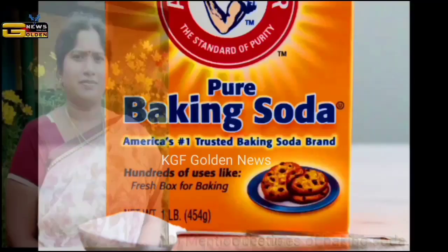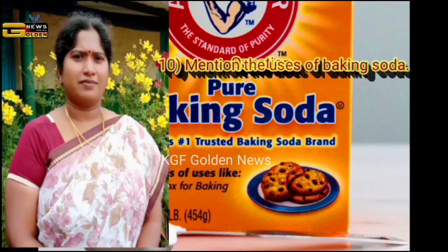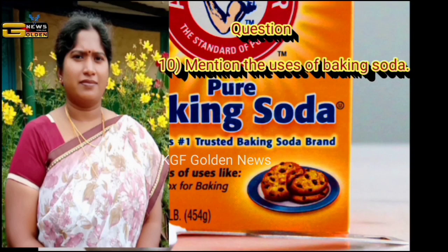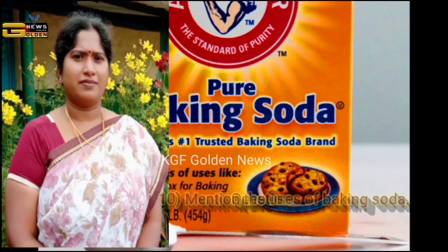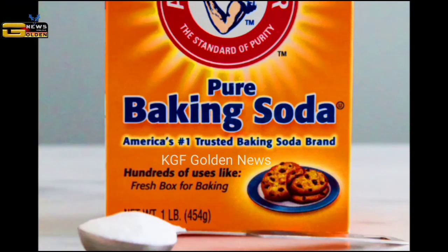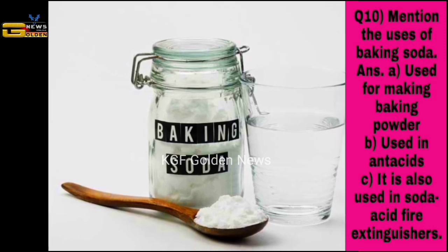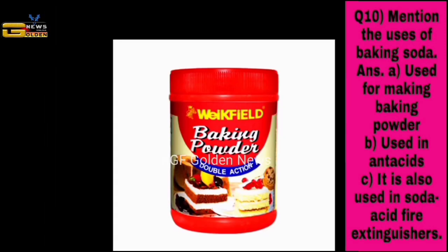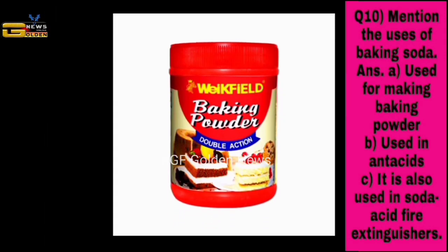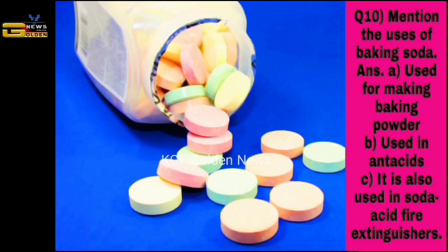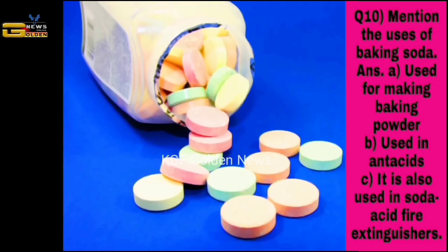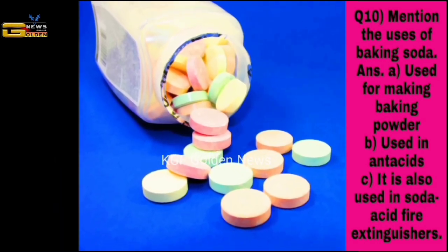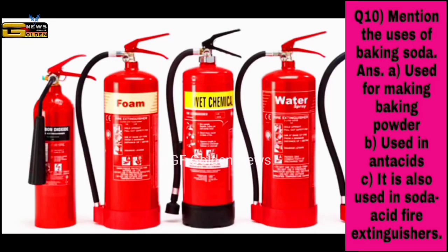An important question. Question number ten: mention the uses of baking soda. The answer is: a. used for making baking powder; b. used in antacids; c. it is also used in soda acid fire extinguishers.